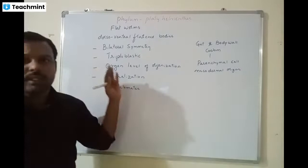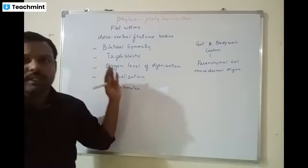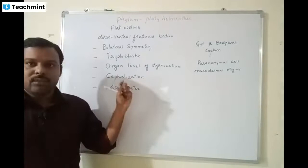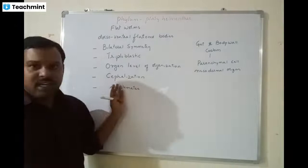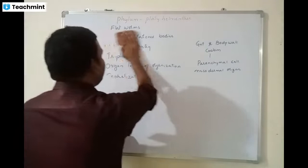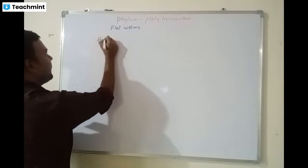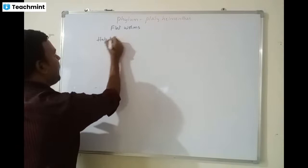Moving on to the general characters — these are the very unique characters of Platyhelminthes: bilateral symmetry, triploblastic, and organ level of organization. We are seeing eyes for the first time in this group, and cephalization. They are truly acoelomates. Regarding habitat, they are mostly endoparasites.